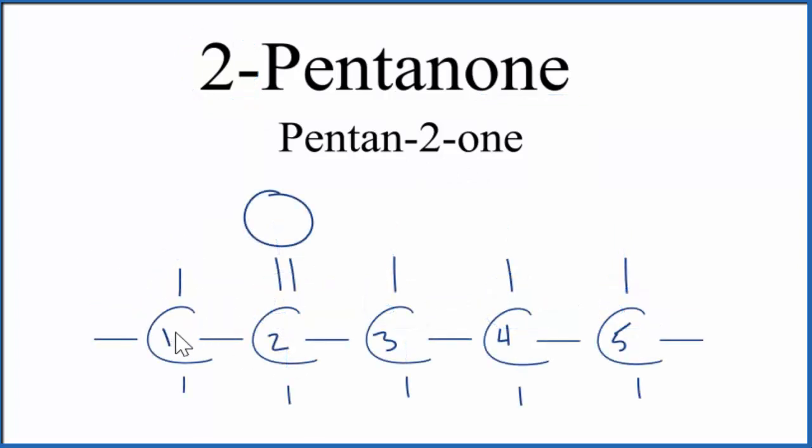And since carbon can only have four bonds and we have one, two, three, four, five, let's get rid of this one right here. So this is the structure for 2-pentanone or pentanone.